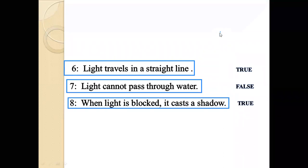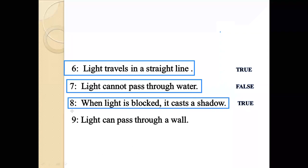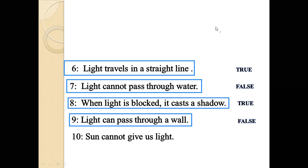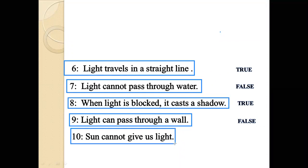Number 8: Light can pass through a wall. This statement is false. The correct statement is: light cannot pass through a wall. Number 10: Sun cannot give us light. This statement is false. The correct statement is: sun can give us light.